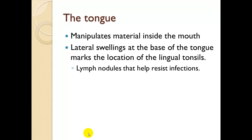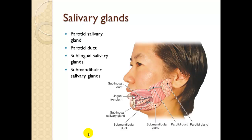The tongue manipulates material inside the mouth. Lateral swellings at the base of the tongue mark the location of the lingual tonsils — lymph nodules that help resist infection and represent the immune system. Lymphatics are located at all the openings in the body. Salivary glands include the parotid salivary gland with its parotid duct, the submandibular gland with its submandibular duct, and the sublingual gland underneath the tongue.